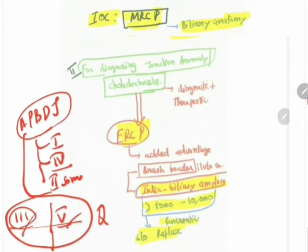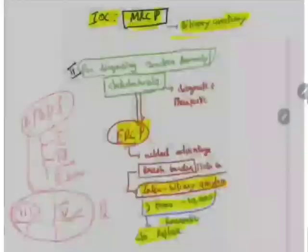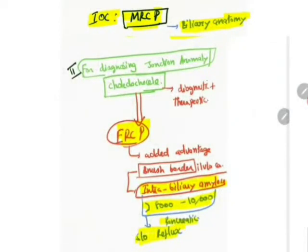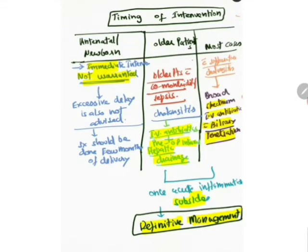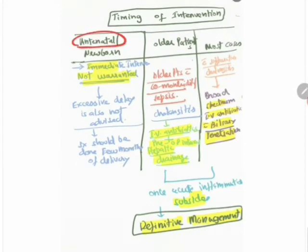The investigation of choice is MRCP, which is the gold standard for biliary tree anatomy. ERCP is used when you want to diagnose the junctional anomaly underlying the choledochal cyst. ERCP has the added advantage of allowing cell brush biopsy for malignant transformation and measuring intrabiliary amylase levels — if greater than 8,000–10,000, it suggests pancreaticobiliary reflux. ERCP can also be therapeutic, allowing endoscopic sphincterotomy or sphincteroplasty.